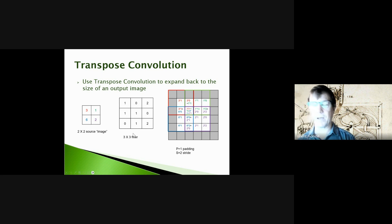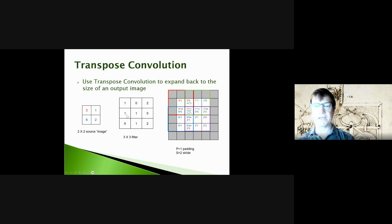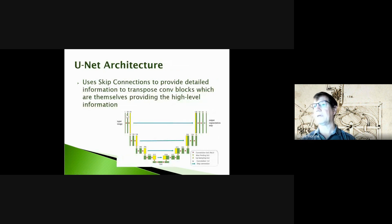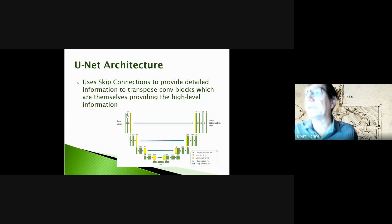You might have multiple filters producing multiple channels, and each filter has parameters that can be learned in the back-propagation training process. In reality, those filter coefficients would all be trained and learned by the system.